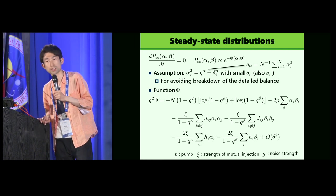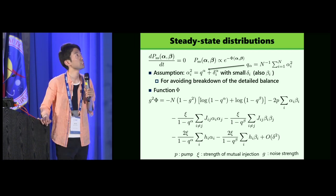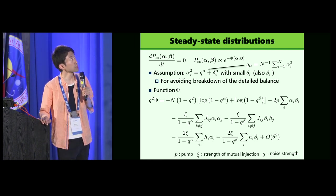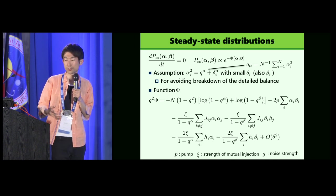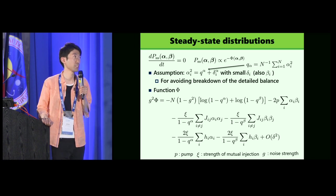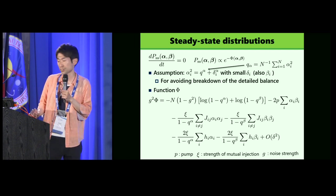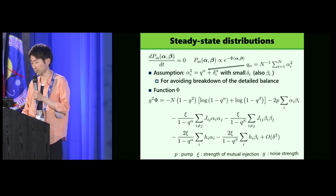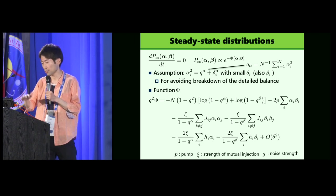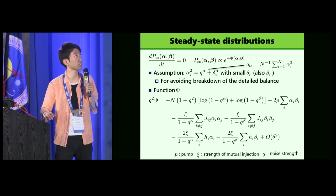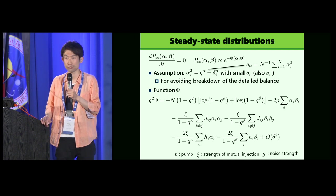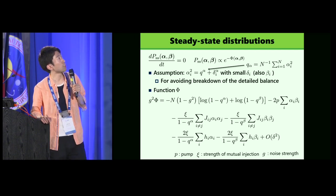This assumption is imposed for avoiding the breakdown of the detailed balance. The detailed balance gives a sufficient condition for the presence of the equilibrium state distributions. So for tractability, or for ensuring the existence of the equilibrium state distributions, we impose the assumption for avoiding the breakdown of the detailed balance. Under some ansatz, and after some calculations, we obtain function phi like this.